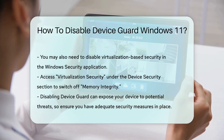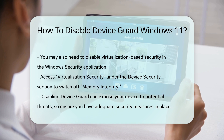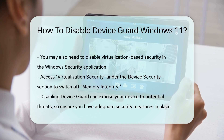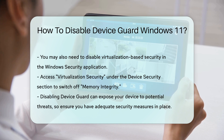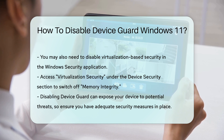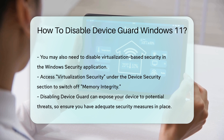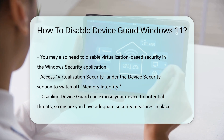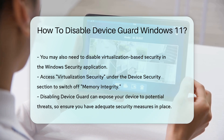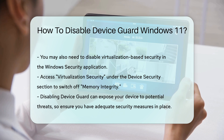Remember, disabling Device Guard can expose your device to potential threats. Always ensure that you have adequate security measures in place, such as antivirus software and regular system updates. By understanding the steps and implications of disabling Device Guard, you can make informed decisions about your device's security settings.